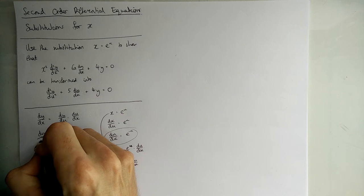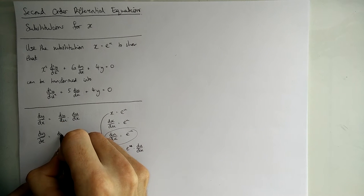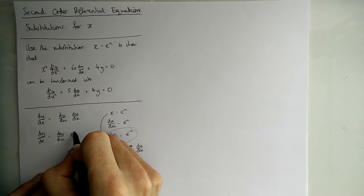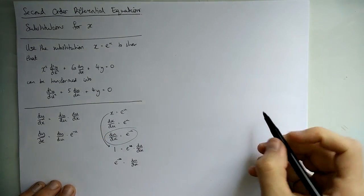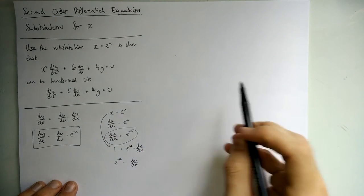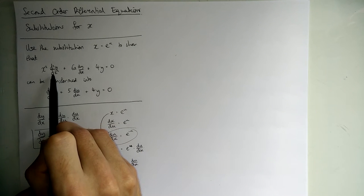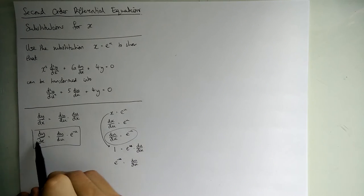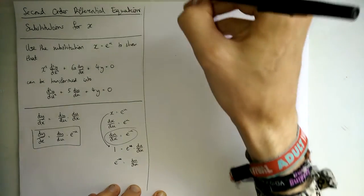So dy/dx is equal to dy/du times by e to the minus u. So we found our first substitution. That bit isn't too bad. We need to now work out what the d²y/dx² is in terms of y's and u's. So we use this to help us. Let's start a new line up here.